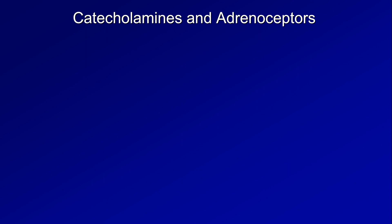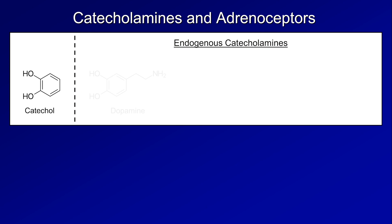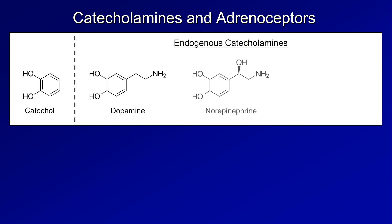The most important vasoconstricting compounds in the body are catecholamines — compounds which contain the catechol functional group and an amine group. Endogenous catecholamines include dopamine, norepinephrine, and epinephrine. Note the strong structural similarities; they actually form a chain in a biosynthetic pathway that begins several steps before dopamine at the amino acid phenylalanine.